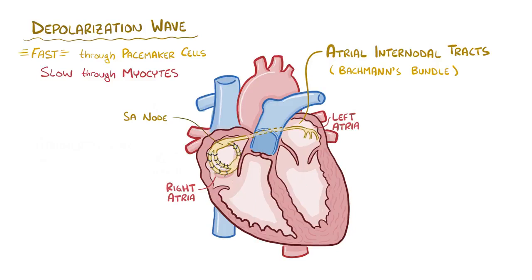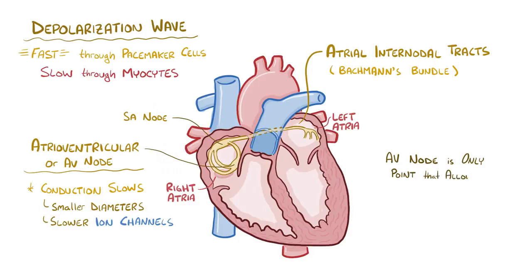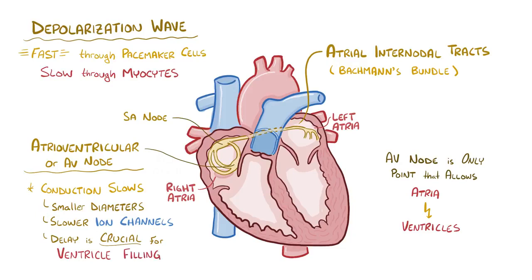While this is happening, the depolarization wave also travels from the SA node through the pacemaker cells to the atrioventricular or AV node. Conduction velocity slows way down at the AV node for two reasons: first, the AV nodal cells have very small diameters, which increases resistance to electrical flow; and second, the AV nodal cells use the relatively slower opening calcium ion channels rather than the faster opening sodium ion channels. This slight conduction delay is crucial in allowing the ventricles to have plenty of time to fill with blood before they contract.